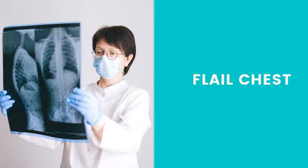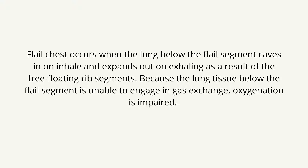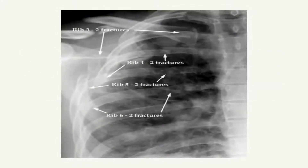Flail chest. What is a flail chest? Flail chest occurs when the lung below the flail segment caves in on inhale and expands out on exhaling as a result of the free-floating rib segment. Because the lung tissue below the flail segment is unable to engage in gas exchange, oxygenation is impaired.